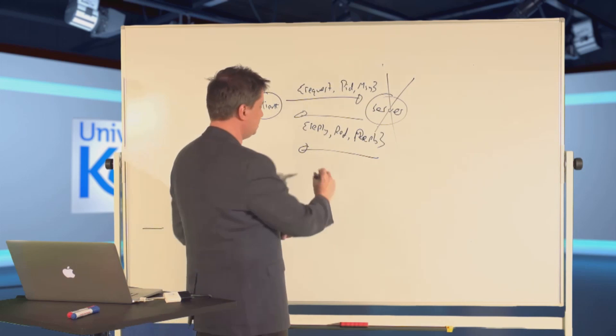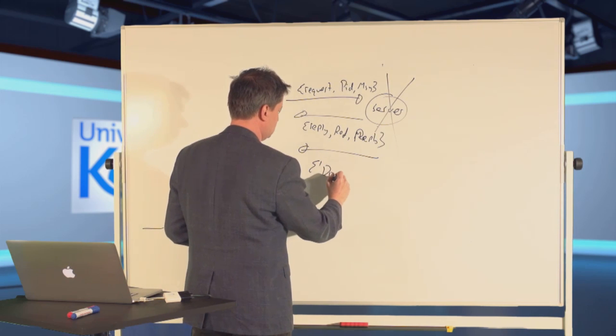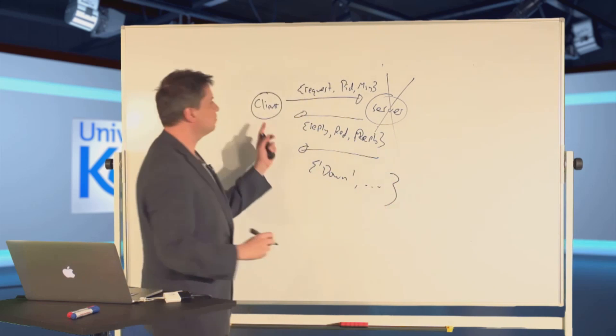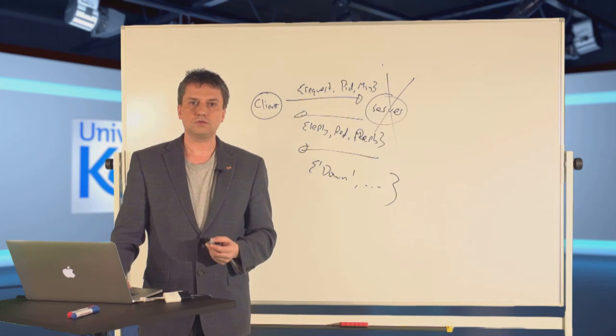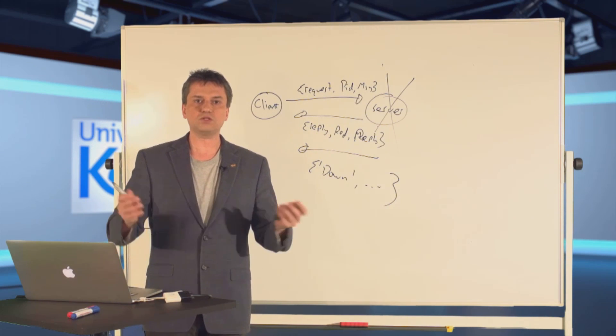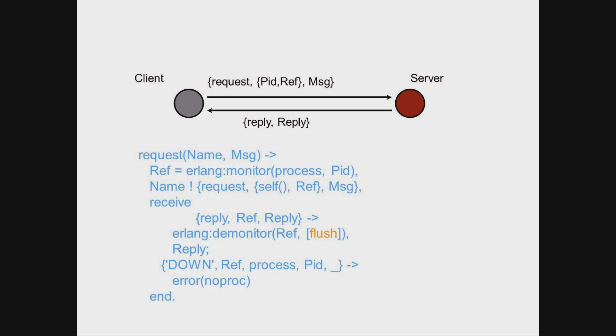We call demonitor, which removes the monitor, but the down message from the server is already in our mailbox. Once we've solved the problem, we've created another one. Luckily, we can pass the flush option to the demonitor bif, which ensures that if there are any down messages, they're removed from the mailbox.